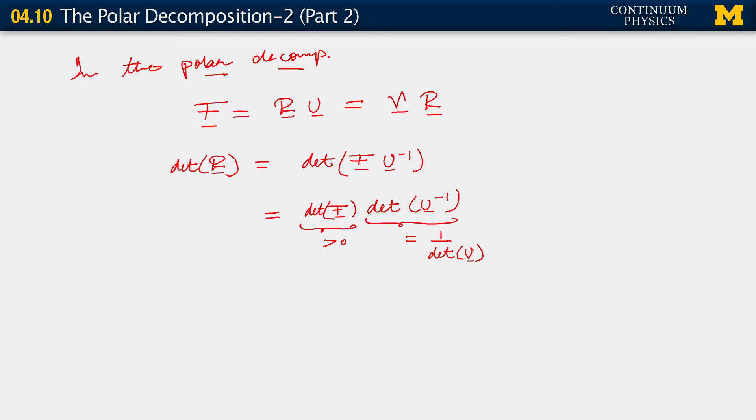But by construction, because we chose u to have positive eigenvalues, because we wanted to keep the stretches positive, it follows that this term also is greater than 0. So it follows that determinant of r,